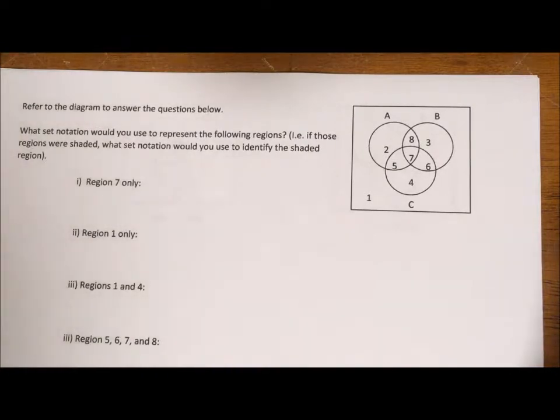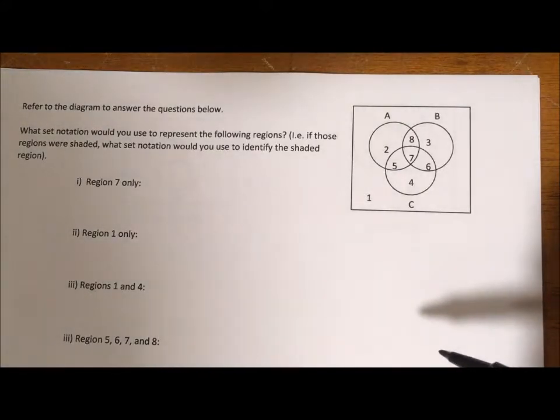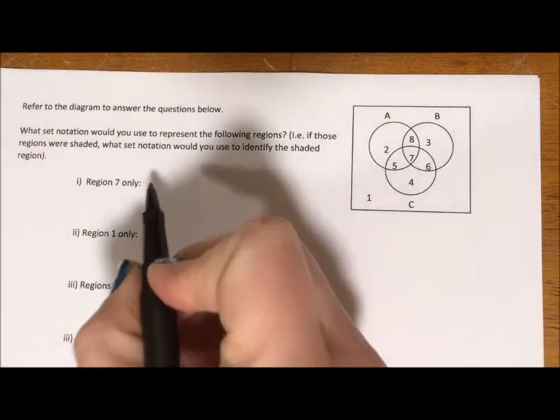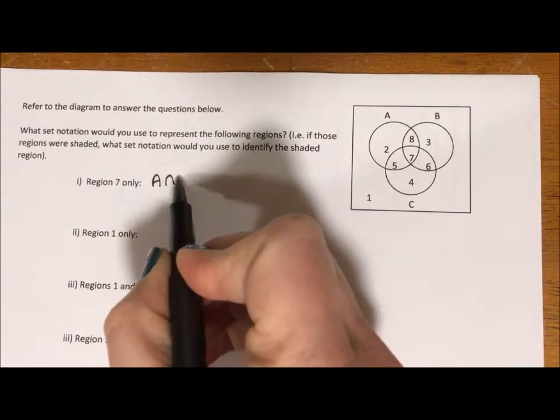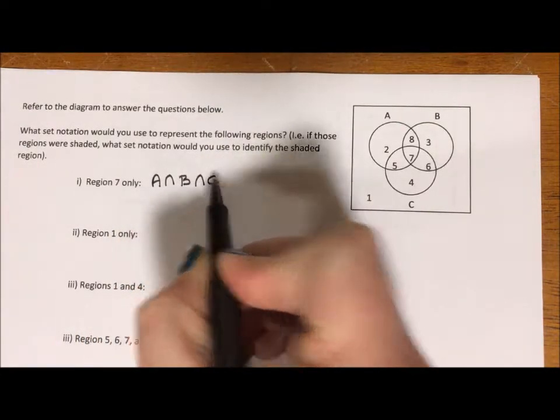Union is when you bring different pieces together. Instead I want what is common to all of them and when you're looking for what is common you're looking for the intersection. So what I want is the intersection of A, B, and C.